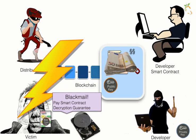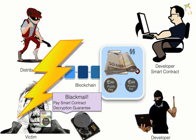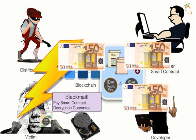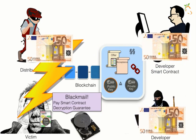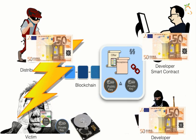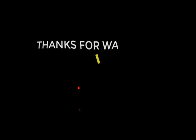The money will stay in the smart contract until everything is resolved. The developer of the ransomware will then send the private decryption key to the smart contract. The smart contract tests if the public key and private key are matched, and distributes the ransom to all criminal parties involved. The victim can then download the private key to decrypt their files.